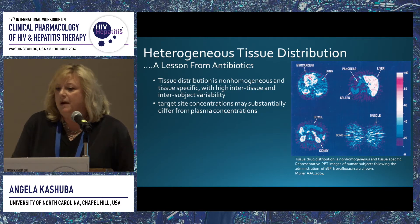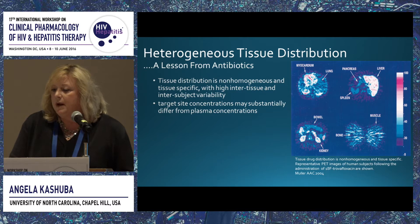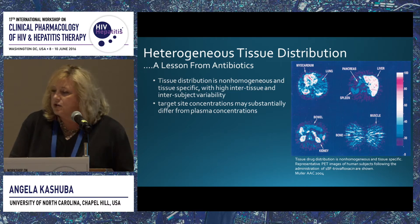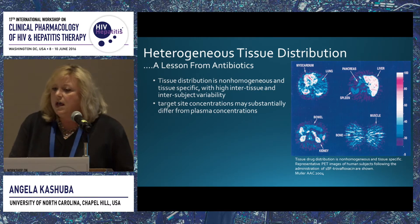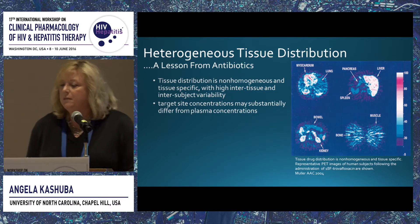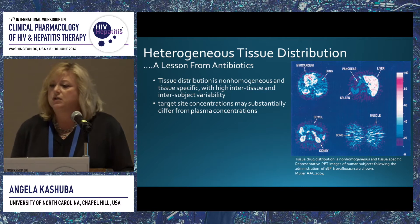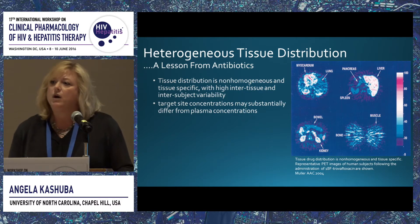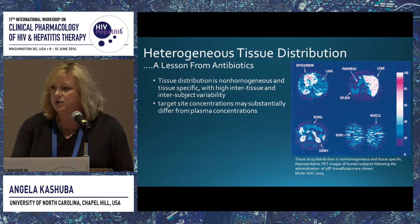We do know, particularly from antibiotics, that tissue distribution is very heterogeneous. Back in 2004, Mueller published data in AAC on labeled trovofloxacin using PET scanning, showing various organs with high concentrations in red and low concentrations in white or blue. What we see is very large variability within one patient within a particular tissue, between tissues, and between subjects. So target site concentrations at places where HIV infection may be established might be very different from plasma concentrations.